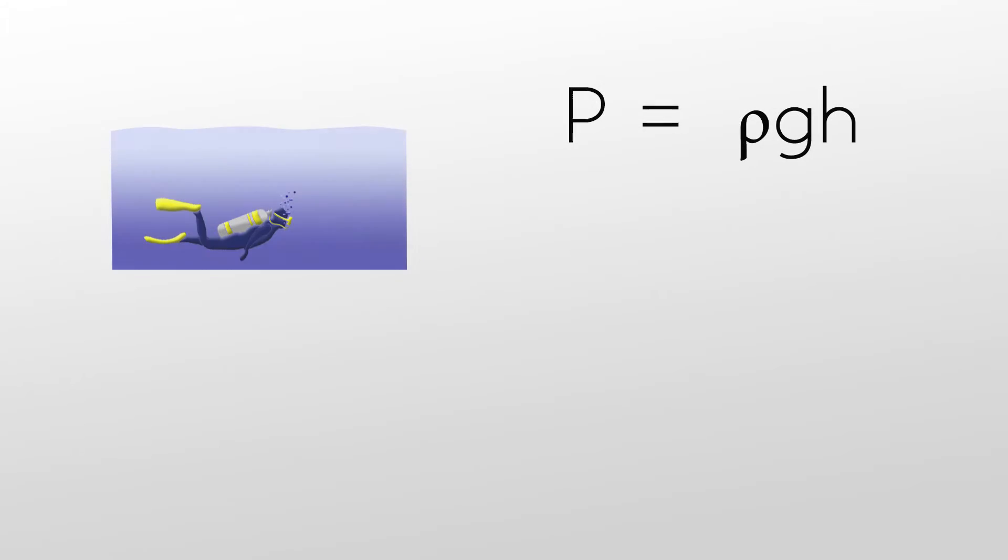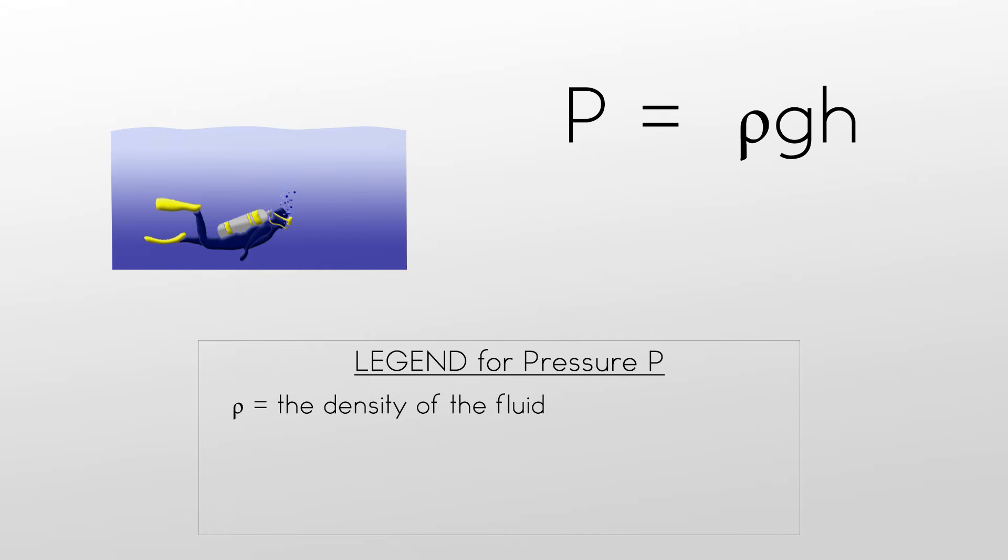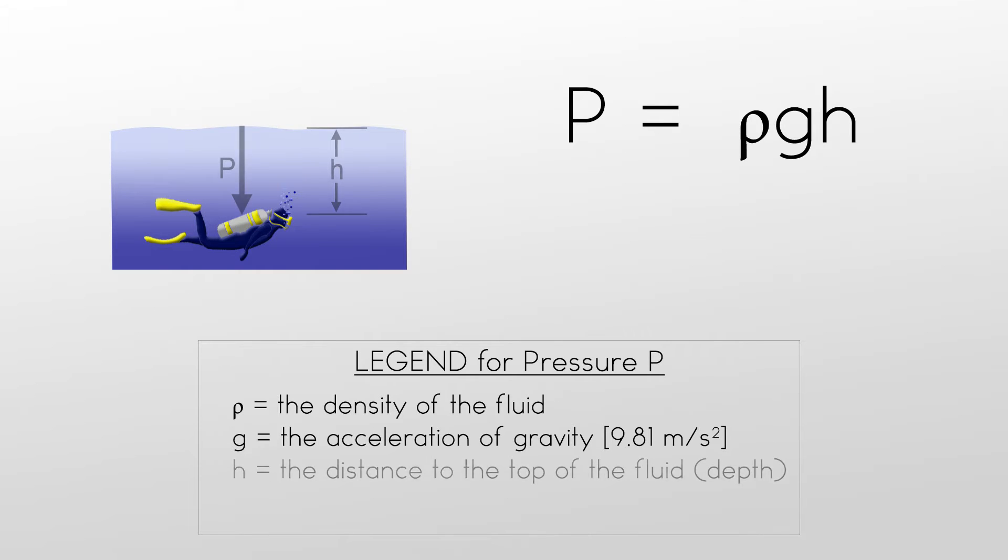This is described by the equation pressure equals rho times g times h, where rho is the density of water, g is the acceleration of gravity, 9.8 meters per second squared, and h is the height of the material above that position.